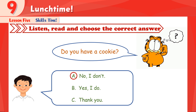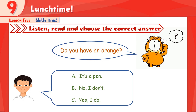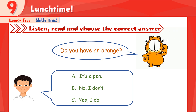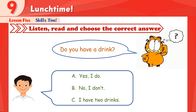Excellent. Question 3: Do you have an orange? We choose C — yes, I do. Perfect. Question 4: Do you have a drink? The answer is B. That's a good choice.